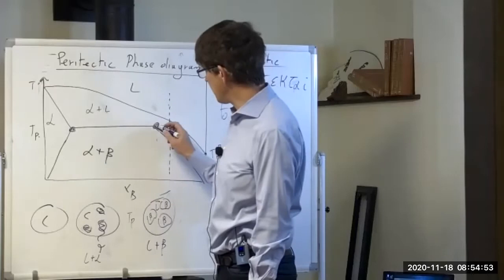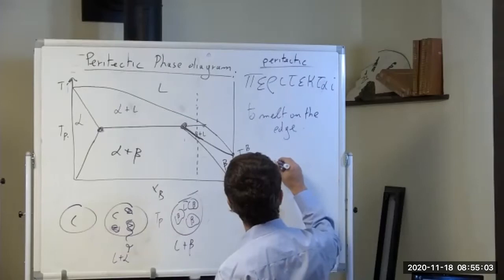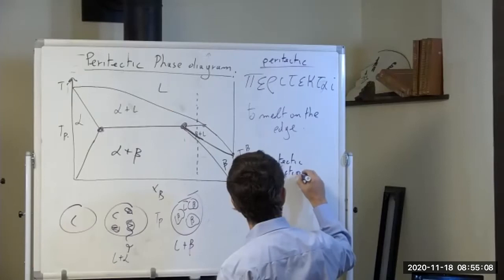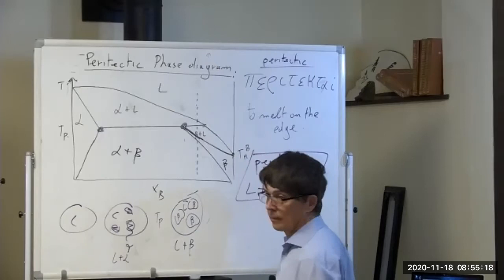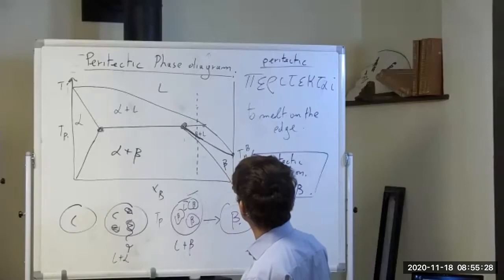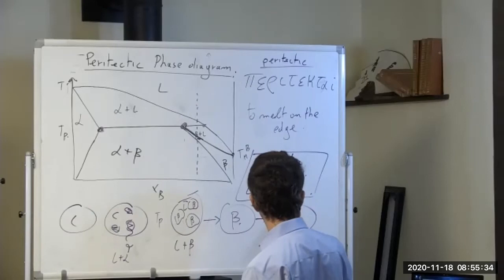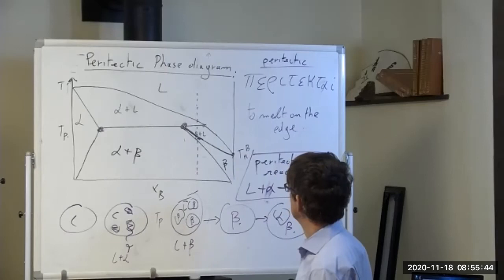What actually happens is that alpha reacts with the liquid to make beta. If you have two phases — alpha and liquid — you can make anything with a composition in between. The peritectic reaction is: liquid plus alpha → beta. Then after that, you're in the beta plus liquid region. At some point you have solid beta, and eventually alpha and beta together — that's the equilibrium cooling path.